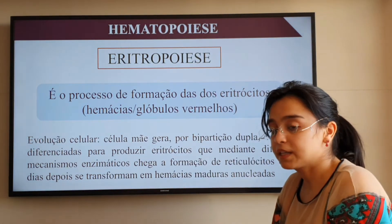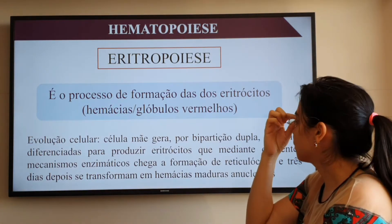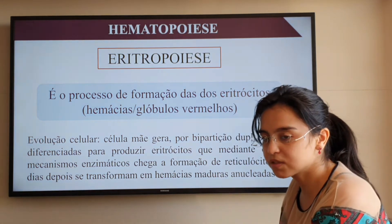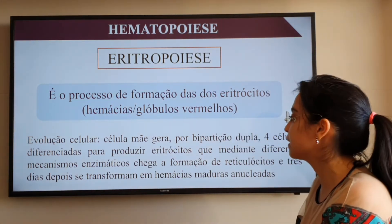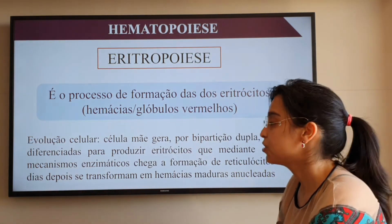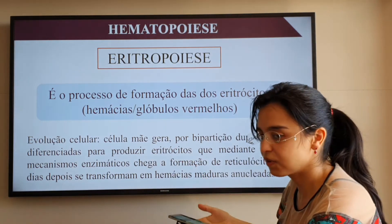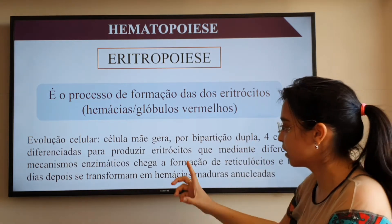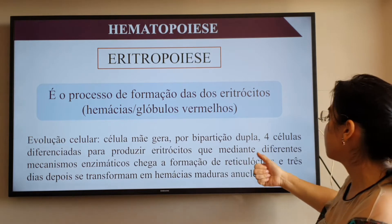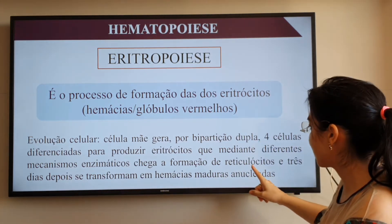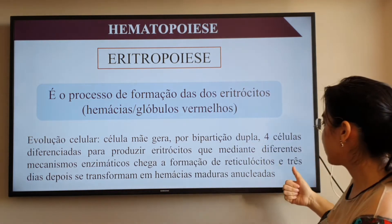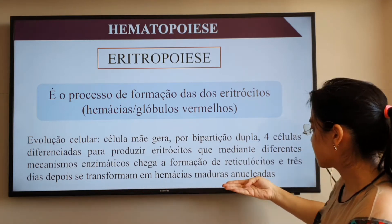Por último entre as mielopoieses, temos a eritropoiese: o processo de formação dos eritrócitos, as hemácias ou glóbulos vermelhos, que conferem a cor vermelha ao sangue graças à presença da hemoglobina. A célula mãe — a célula indiferenciada mieloide — gera por bipartição dupla quatro células diferenciadas que, mediante diferentes mecanismos enzimáticos, chegam à formação de reticulócitos. Esses reticulócitos são convertidos em hemácias após aproximadamente três dias, formando hemácias maduras anucleadas.